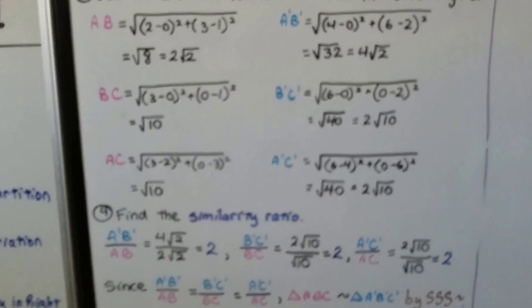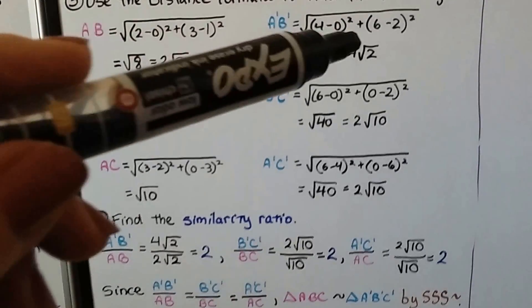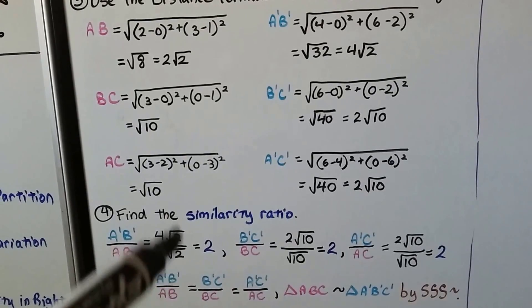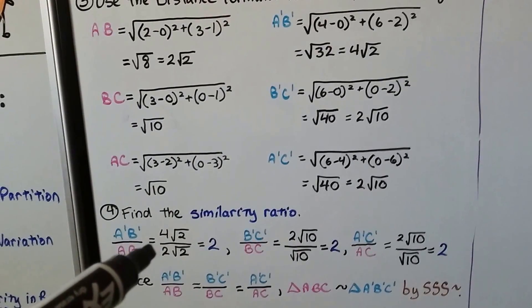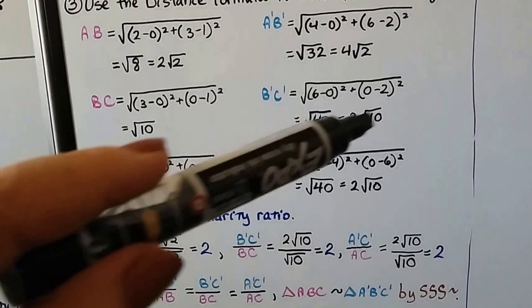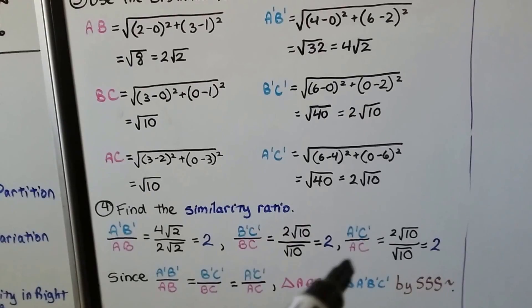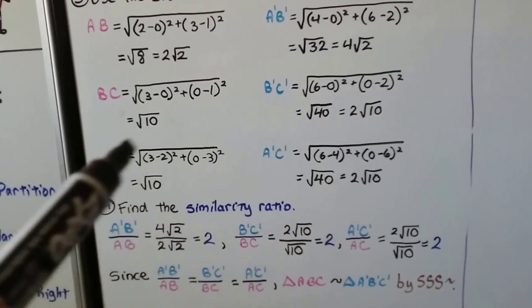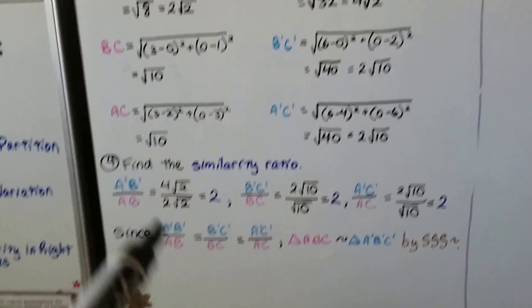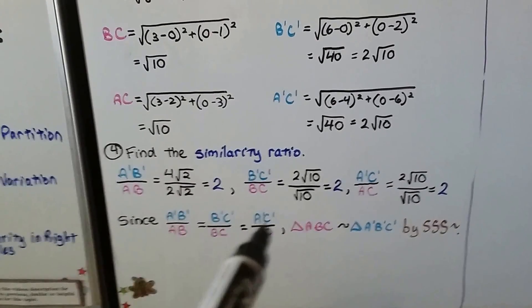Now we find the similarity ratio. A'B'/AB is 4√2 over 2√2. The √2s cancel out as 1, and we're left with 4/2, which equals 2. B'C'/BC is 2√10 over √10, which cancels to 2. A'C'/AC is 2√10 over √10, which again cancels to 2. So they're all equal to each other.